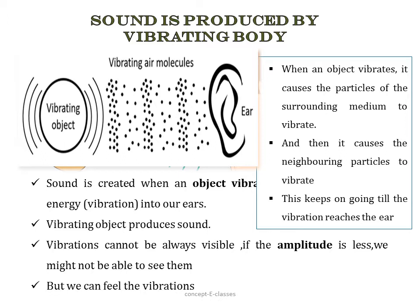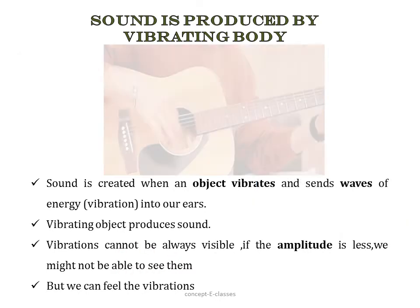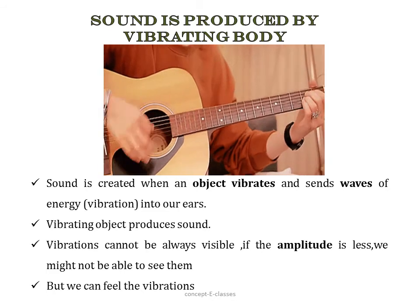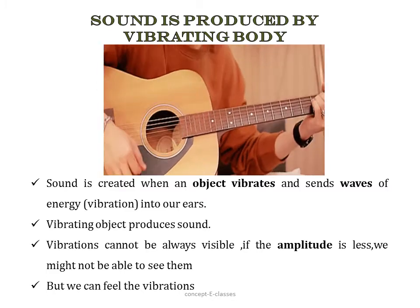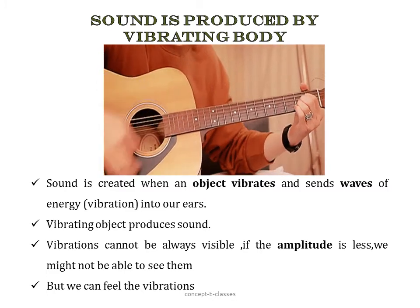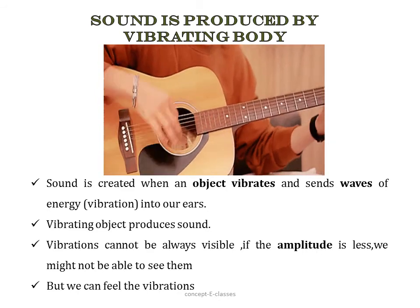Do all vibrating objects produce a sound? Yes, all vibrating objects produce sound, but in some cases the vibrations are easily visible to us. For example, if we strike a metal pan with a stick, we are able to see the vibration. But in most cases the vibration is not visible, due to the amplitude. If the amplitude is less, we might not be able to see the vibrations, but we can feel them. For example, when someone plays a big guitar, we know the strings vibrate but we are not able to see them. However, if you place a hand on the body of the guitar, you can feel the vibrations.